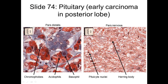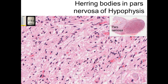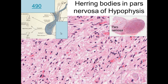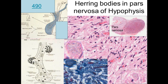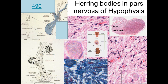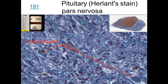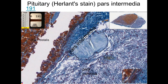In the pars nervosa we have herring bodies, which are swollen regions of the axons coming down from the hypothalamus. You also have a host of pituitocytes, which are support cells for all the nerves coming down. In the pars nervosa here we can see herring bodies. These swollen portions of the axons contain oxytocin and antidiuretic hormone, which affect the kidney, the mammary gland, and the uterus.